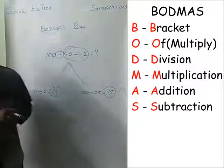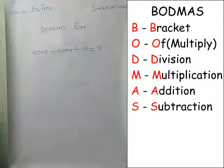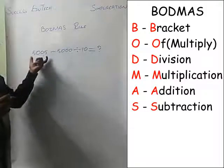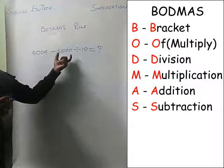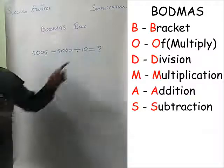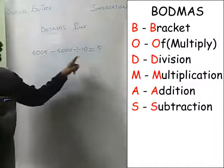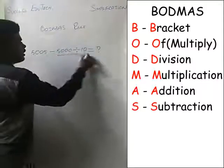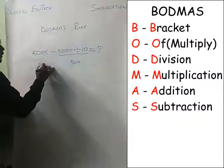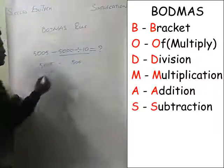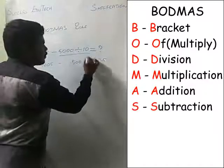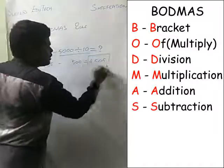Let's take another example. The given expression is 5005 minus 5000 divided by 10. By the BODMAS rule, you have to do the division first: 5000 divided by 10 is 500. Then do the subtraction: 5005 minus 500 equals 4500. So your final answer is 4500.